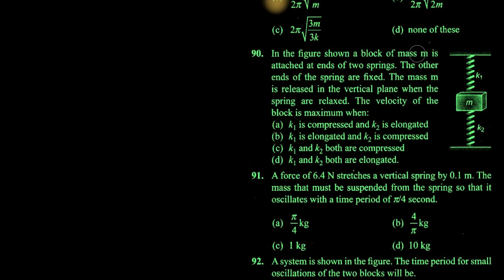A block of mass m is attached at two ends to springs; the other ends are fixed. The mass is released in a vertical plane when the springs are relaxed. The velocity of the block is maximum at its mean position, and the mean position will be a little lower. At that point, spring k1 will be elongated and spring k2 will be compressed. Your answer is option B.